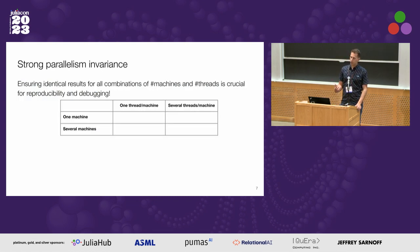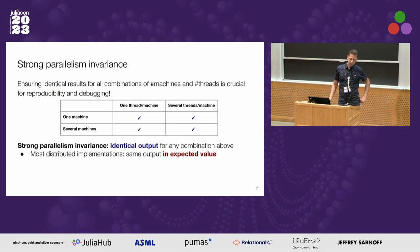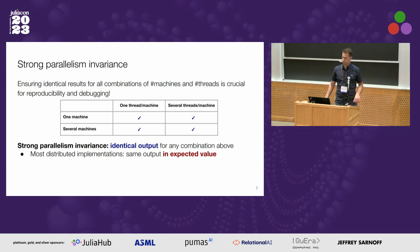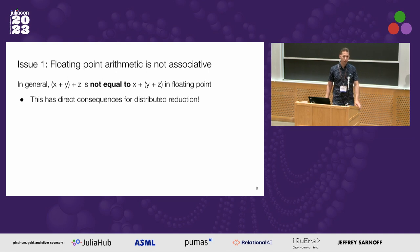I keep mentioning strong parallelism invariance. It is useful for the purposes of reproducibility and also for debugging. You can use Pigeons on one machine with one or several threads, or on several machines with one or several threads per machine. We guarantee identical output — not just distributional equality or expected value equality, but the output is actually identical. I'll highlight two things of interest to the general Julia developer: first, floating point arithmetic is not in general associative, and second, the use of the `@threads` macro in Julia.